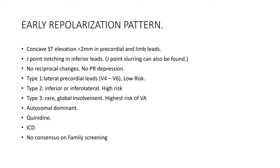There are 3 types of early repolarization syndrome. Type 1: pattern found only in lateral precordial leads V4 to V6 — low risk. Type 2: pattern found in inferior and inferolateral leads — high risk. Type 3: rare, pattern found globally with the highest risk of ventricular arrhythmias. The trait is autosomal dominant. The currently available treatment is quinidine for early repolarization syndrome. ICD is indicated if the patient has cardiac arrest. This is the only channelopathy with no current consensus on prophylactic management.